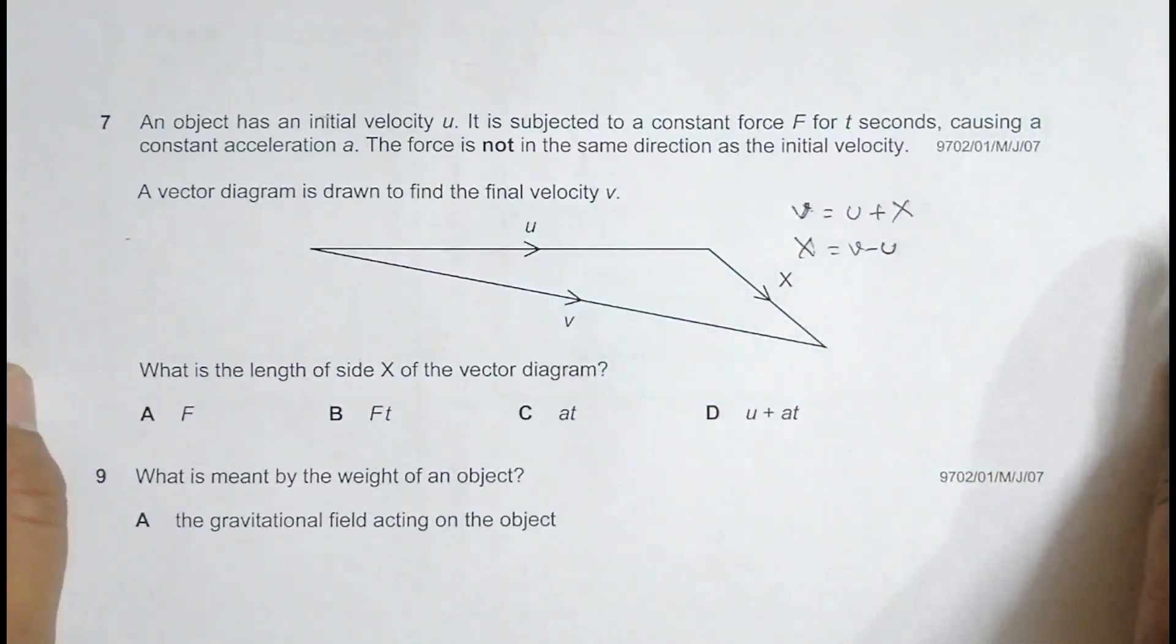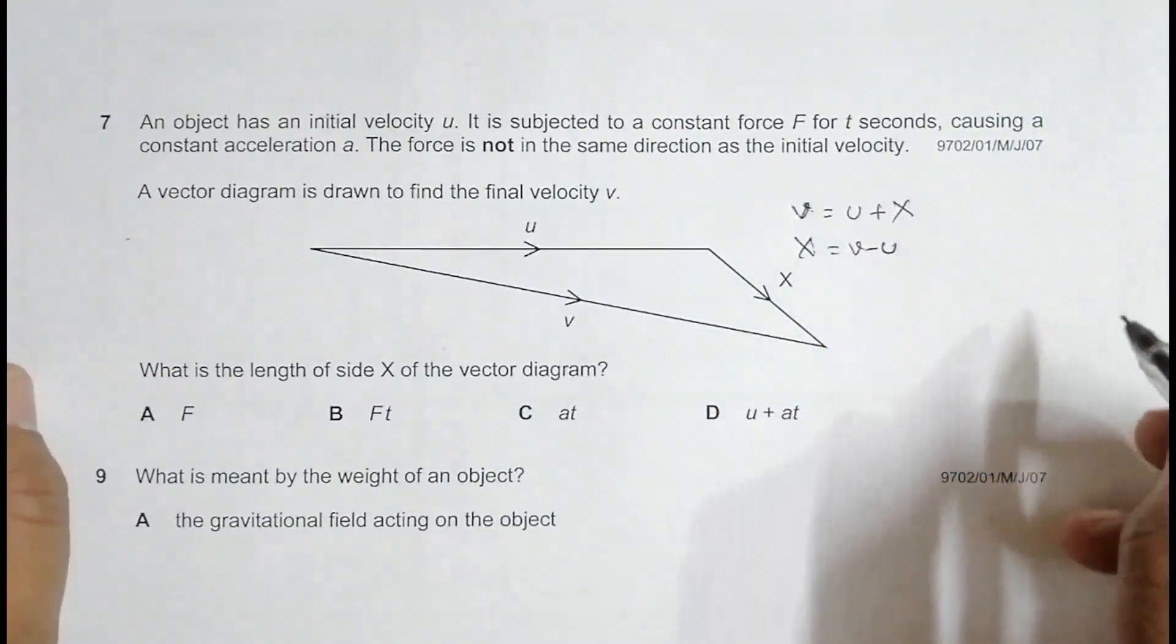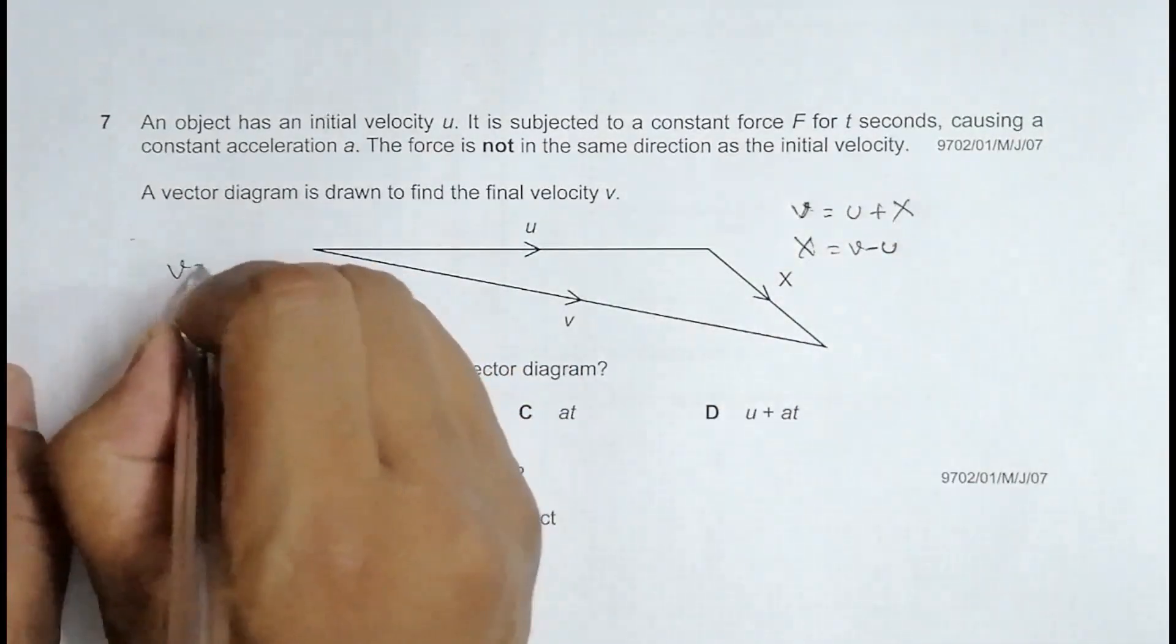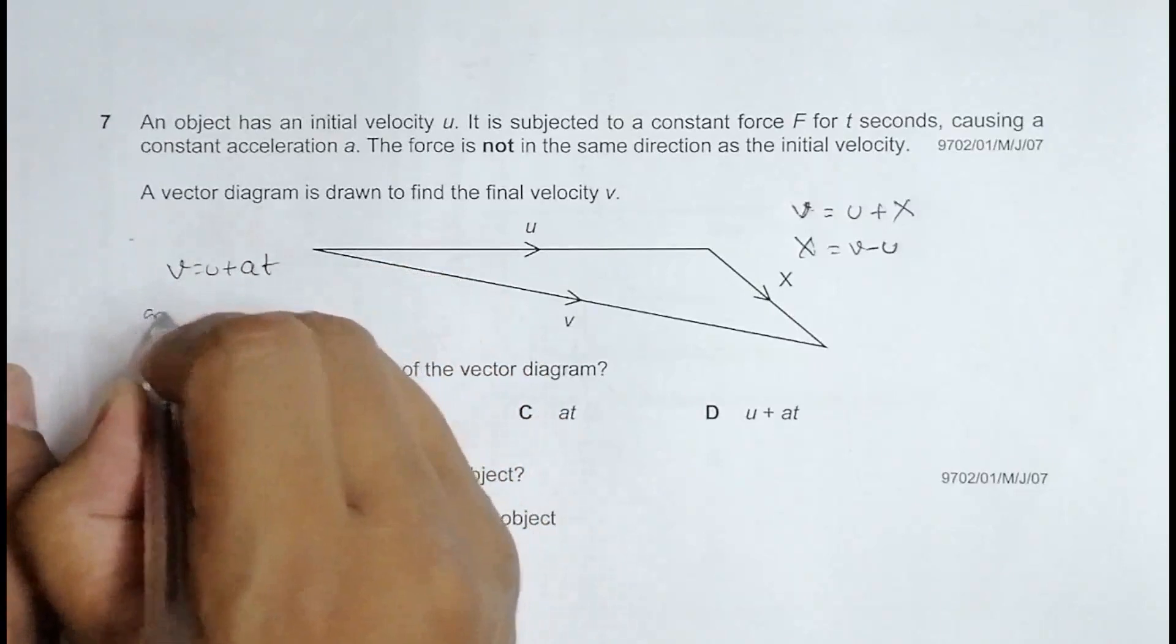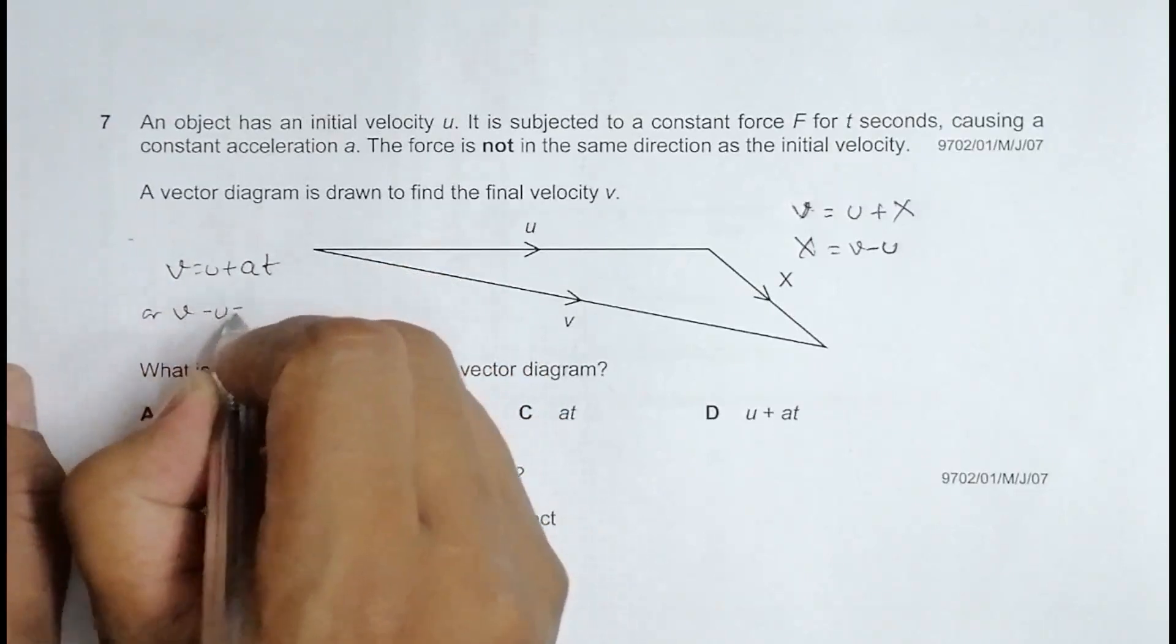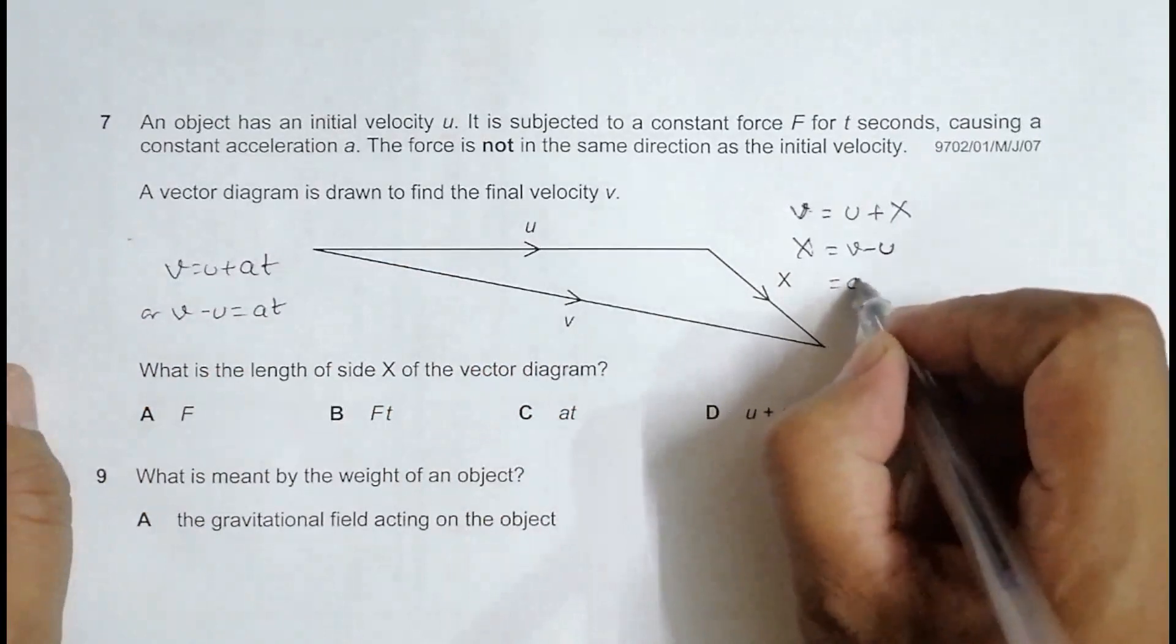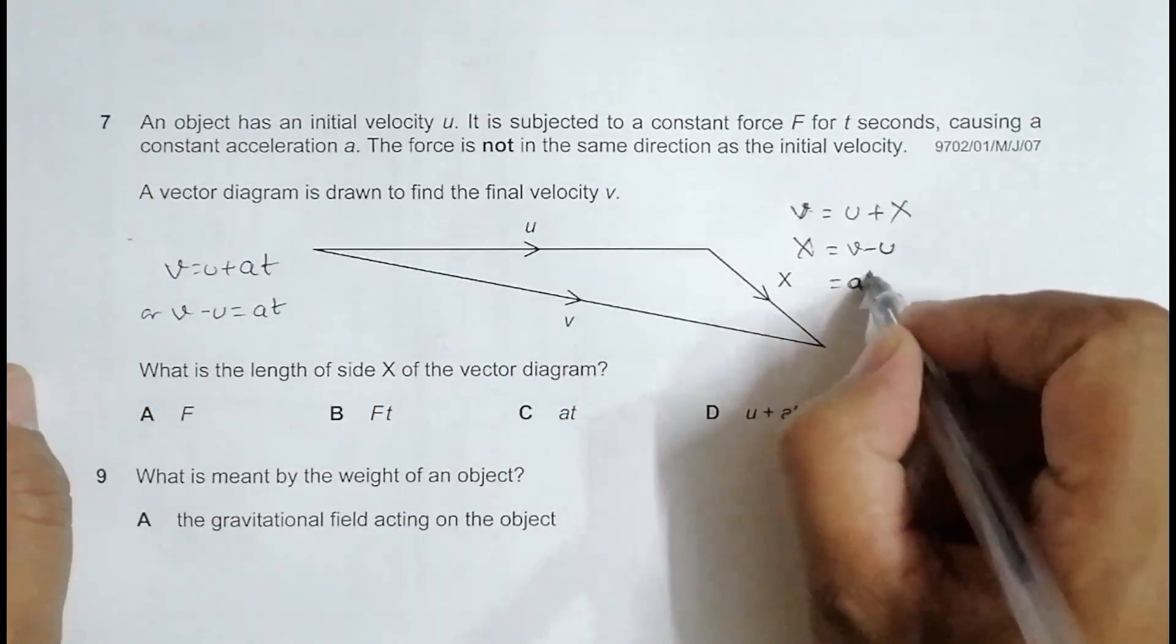So, from the equations of kinematics, we definitely know that V equals U plus AT, which means V minus U is equal to AT. So comparing these two things, it should be equal to A into T.